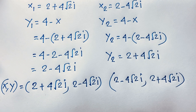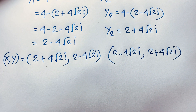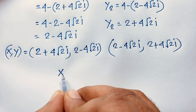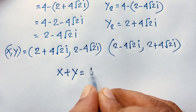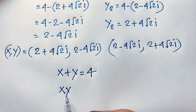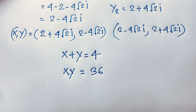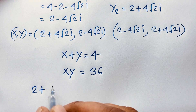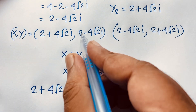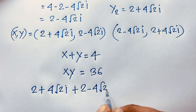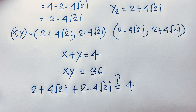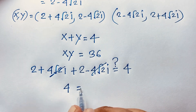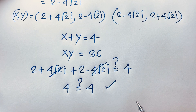Both solutions are complex numbers — there is no real solution; both are imaginary solutions. Now let's verify our answer. For x plus y equals 4: x equals (2 plus 4 square root 2 i) plus y equals (2 minus 4 square root 2 i). The imaginary parts cancel since one is plus and one is minus, so 2 plus 2 equals 4, which equals 4. Left hand side equals right hand side. ✓